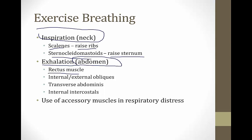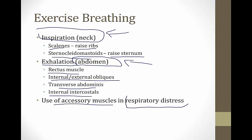For forceful exhalation during exercise, you add abdominal muscles — like the rectus muscles, internal and external obliques, transverse abdominis, and internal intercostals. In the hospital, you'll hear clinicians say a patient is using accessory muscles to breathe, meaning they're visibly contracting their neck and abdomen — a sign of respiratory distress indicating that quiet breathing is insufficient for their sick lung condition.